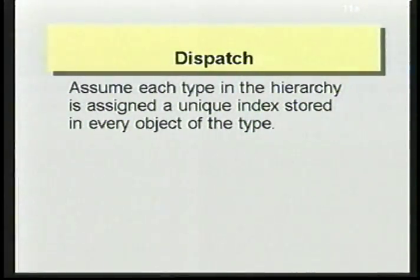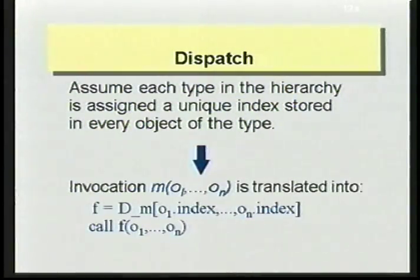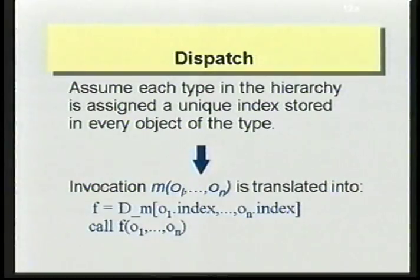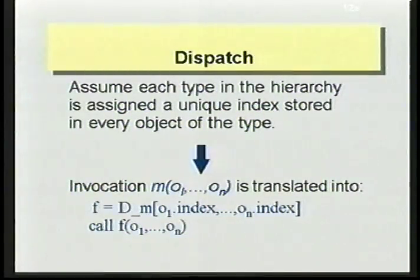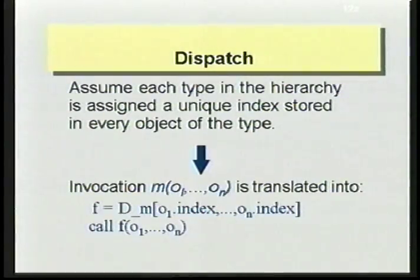How do we use such dispatch tables to dispatch a method invocation? Assuming each type in a hierarchy owns a unique index stored in every object of that type, if we have an invocation M with arguments O1 to ON, we first get the index of the type of each argument, and using these indices we retrieve the pointer to the method at that position in the dispatch table, then call the method with arguments O1 to ON.